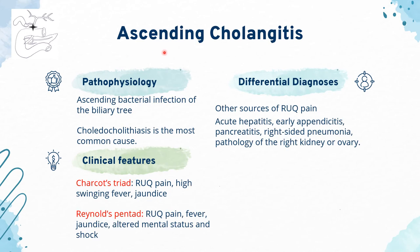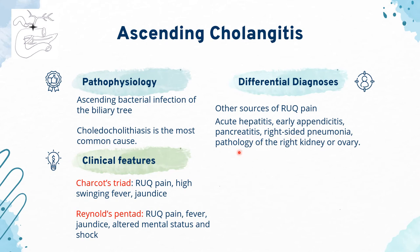Acute cholangitis, also known as ascending cholangitis, is a life-threatening condition caused by ascending bacterial infection of the biliary tree. Choledocholithiasis is the most common cause, with stones in the CBD leading to partial or complete biliary obstruction. Clinical features include Charcot's triad — right upper quadrant pain, fever, and jaundice — and Reynolds' pentad, which additionally includes altered mental status and shock. It may cause life-threatening acute suppurative cholangitis, which must be drained urgently. Differential diagnoses for right upper quadrant pain include acute hepatitis, early appendicitis, pancreatitis, right-sided pneumonia, and right kidney or ovarian pathology.